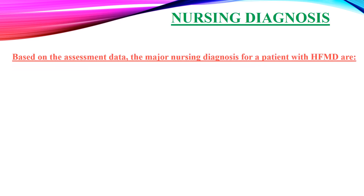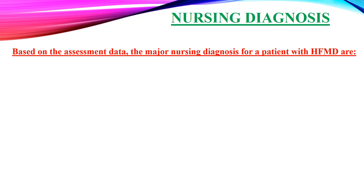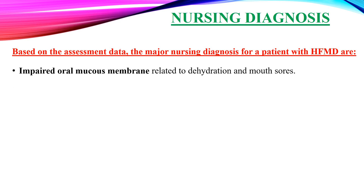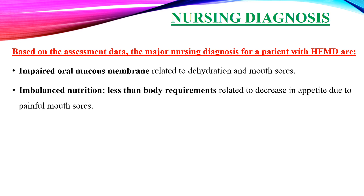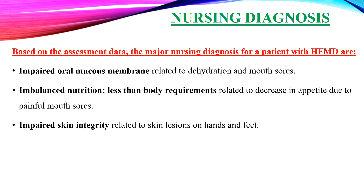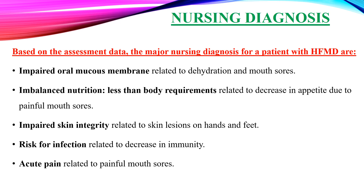Nursing Diagnosis: based on the assessment data, the major nursing diagnoses for a patient with HFMD are: impaired oral mucous membrane related to dehydration and mouth sores; imbalanced nutrition, less than body requirements, related to decreased appetite due to painful mouth sores; impaired skin integrity related to skin lesions on hands and feet; risk for infection related to decreased immunity; and acute pain related to painful mouth sores.